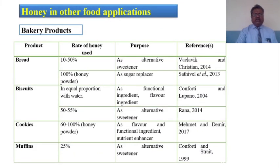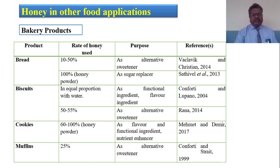In other food products, honey is especially used in bakery items such as breads, biscuits, cookies and muffins. Generally honey is used at different percentages in these products as an alternative sweetener, sugar replacement, or functional flavour ingredient. Honey is therefore very useful in bakery products.